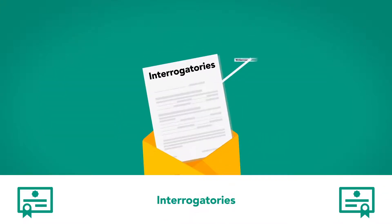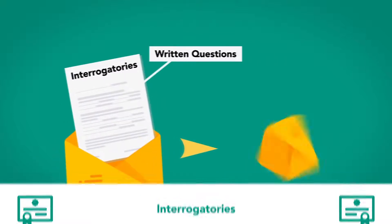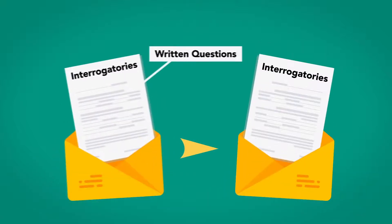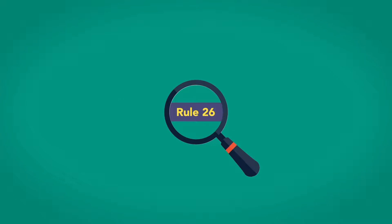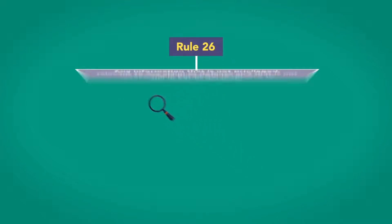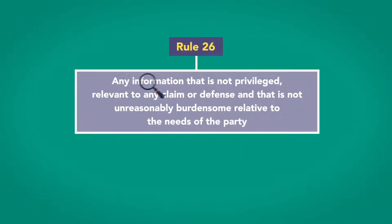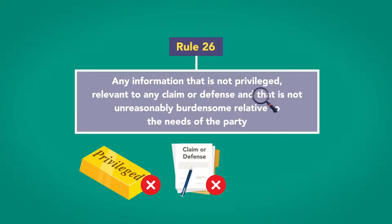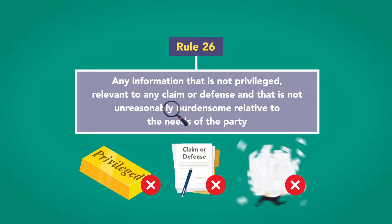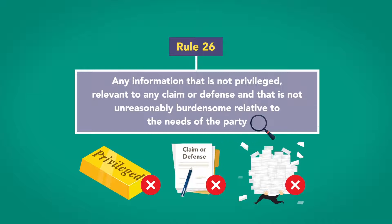Interrogatories are written questions that one party sends to another. They can seek any of the information that is generally discoverable under Rule 26 — that is, any information that is not privileged, relevant to any claim or defense, and that is not unreasonably burdensome relative to the needs of the party.